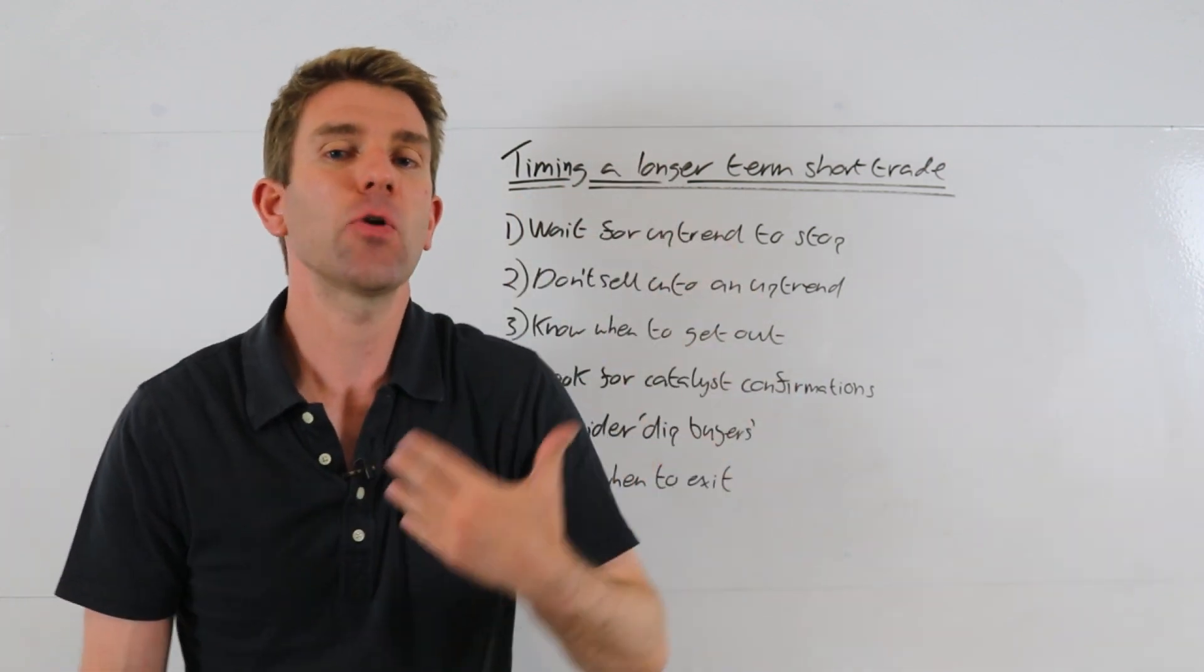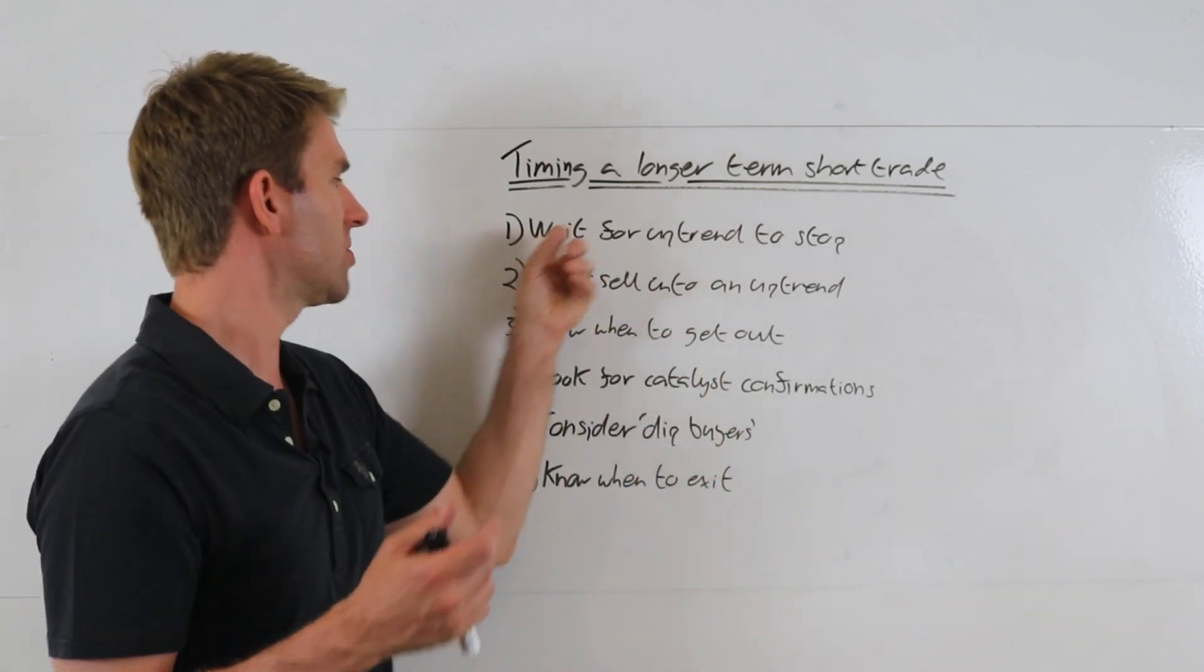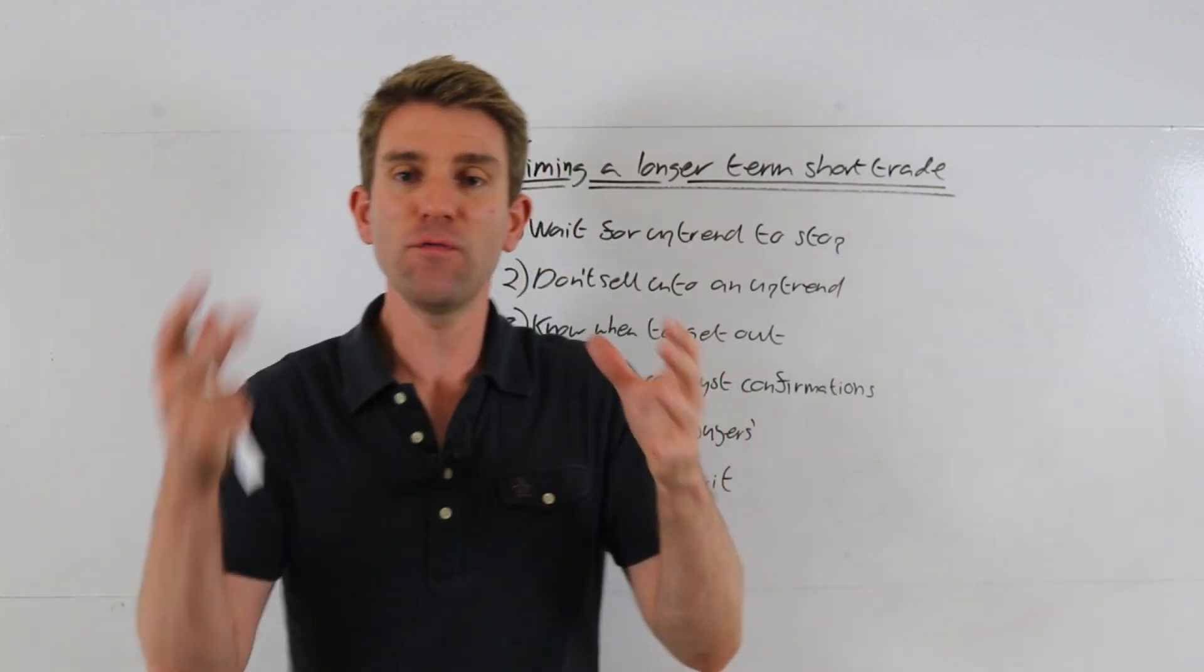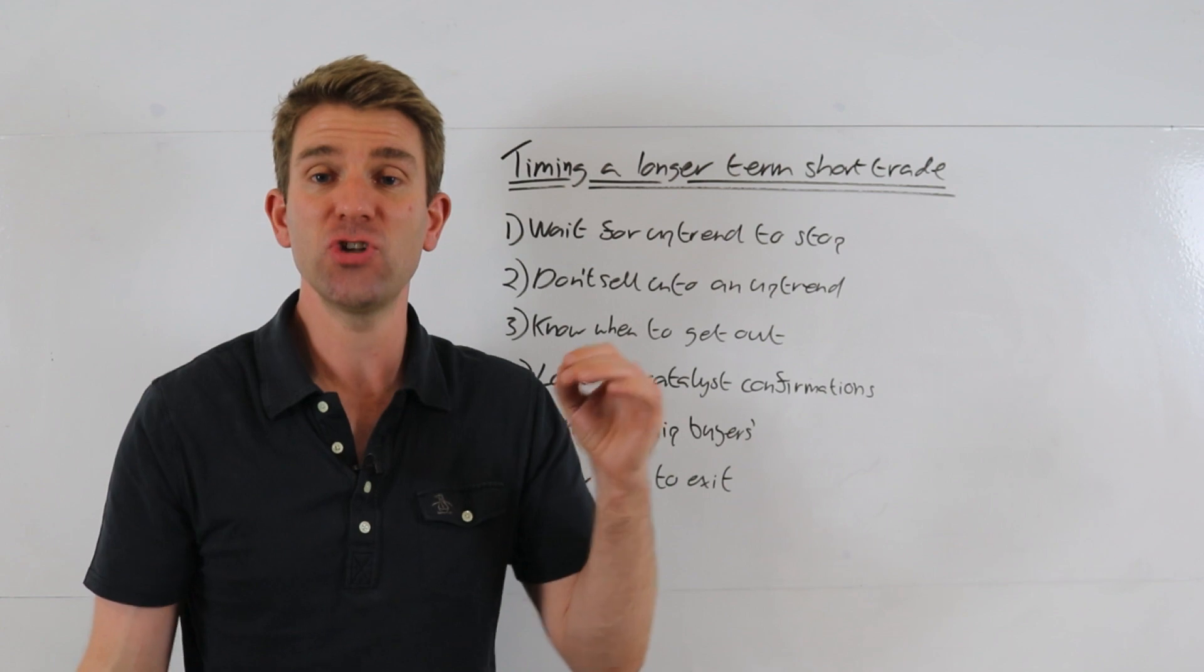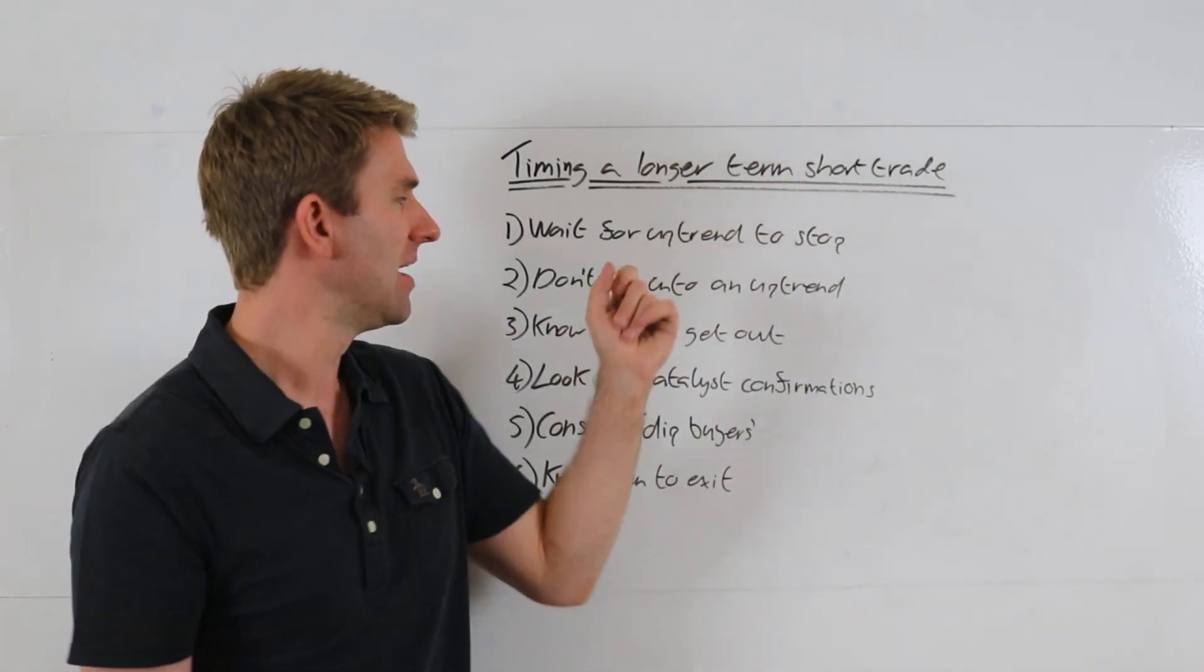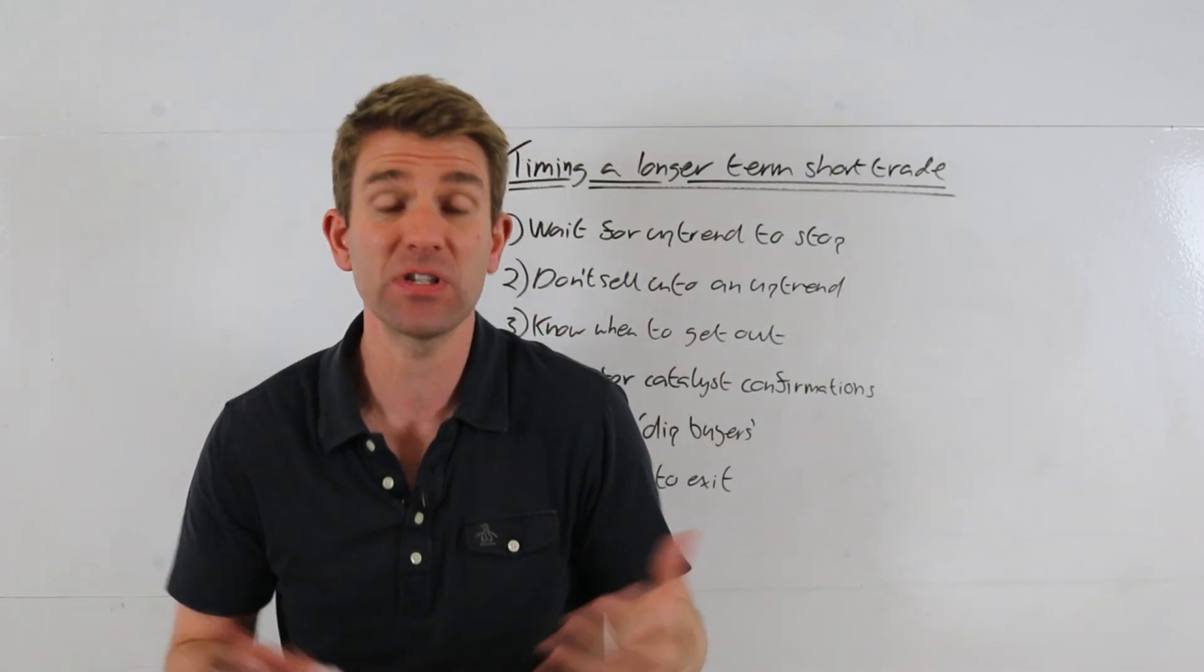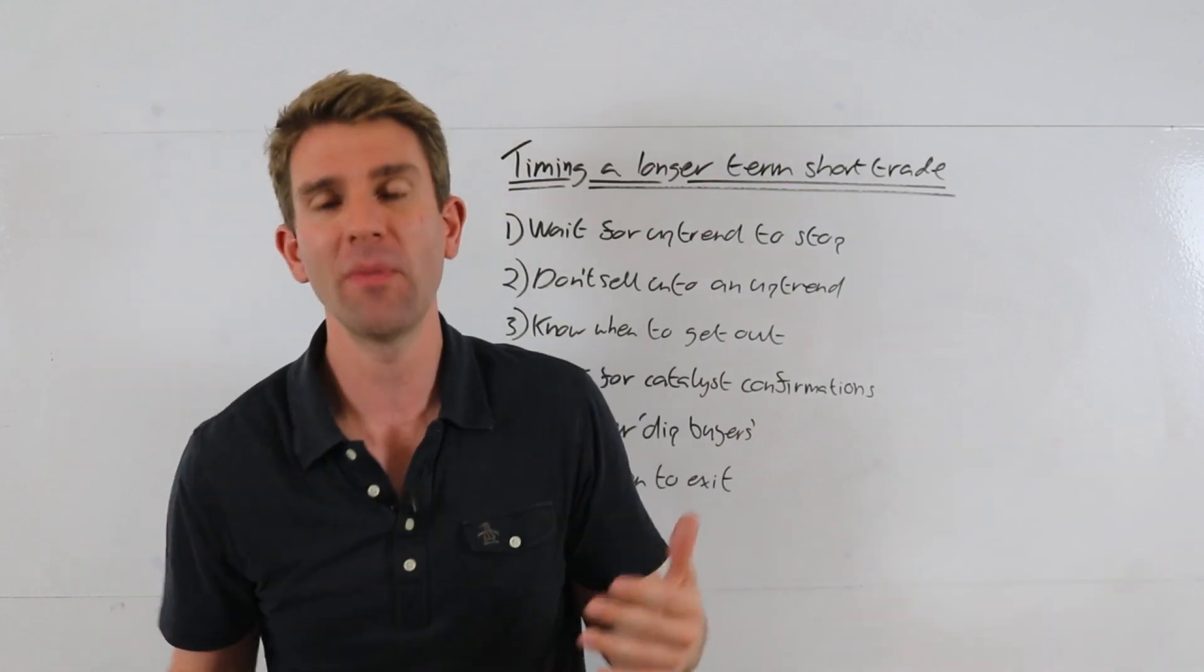So putting technicals aside for the moment, how do we time it and how do we kind of guide ourselves? Well, for me there's two types of short scenarios. Number one is that you've got a scenario where the market is just chugging up and you believe that it's a short. That's super dangerous to start stepping in front of that, and I definitely would not recommend selling into the uptrend.